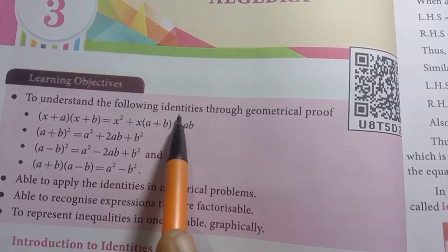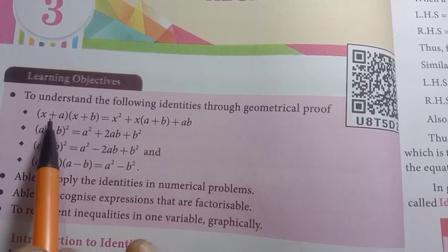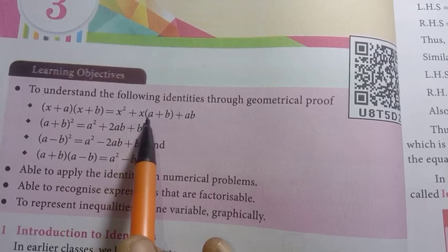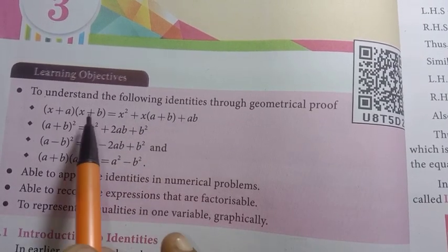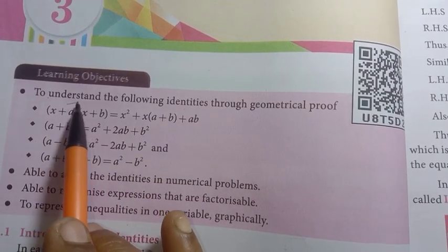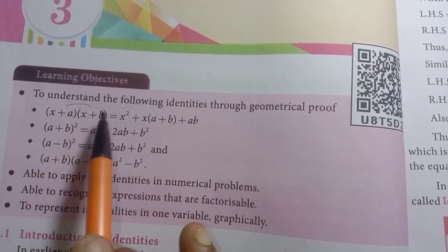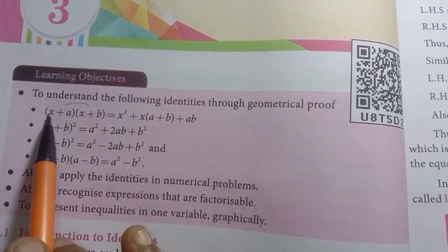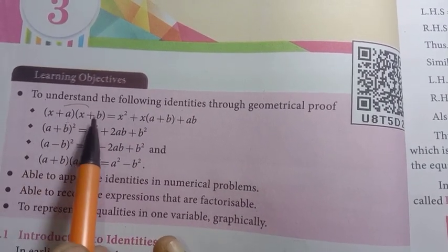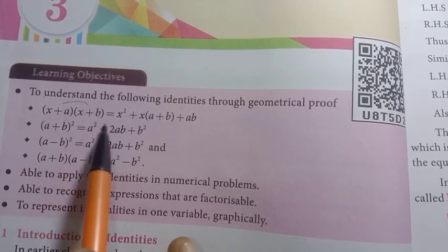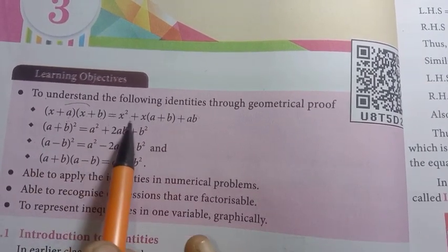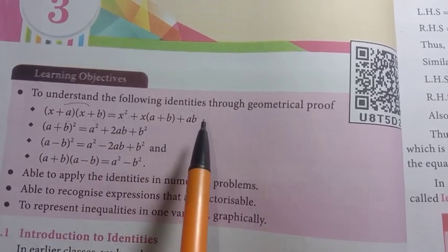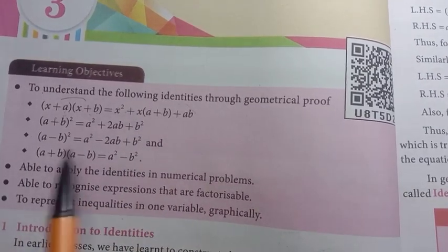Let's look at Identities. What are identities? The formula is: x plus a, into x plus b, equals x squared plus x into a plus b, plus ab. When we know the values of x, a, and b, we can apply this. The left hand side is equal to the right hand side — that's what makes it an identity. The two sides are equal for any number.